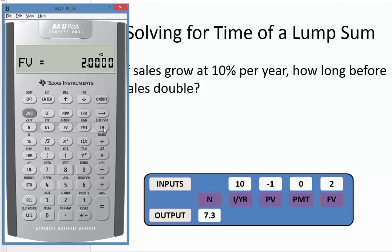We solve for the number of periods, and in 7.27 years, these sales will double.